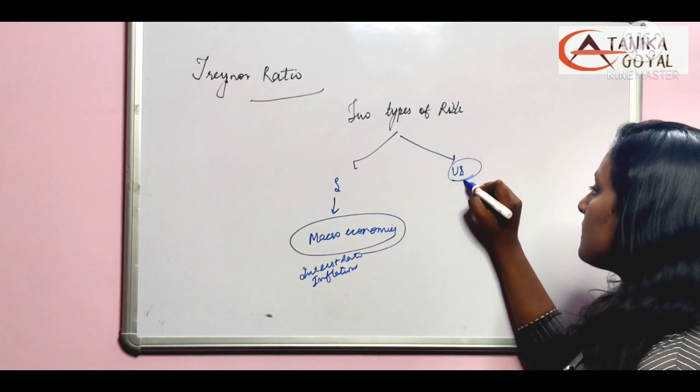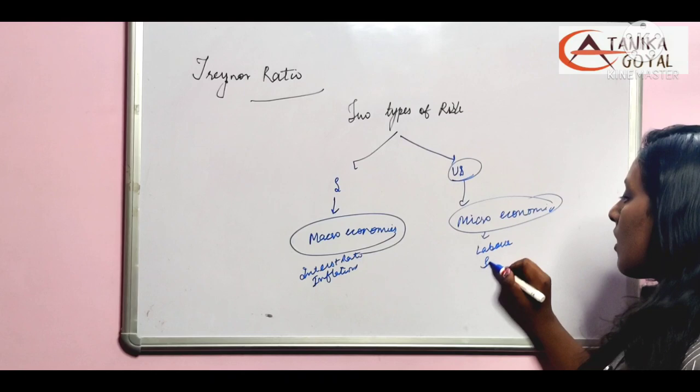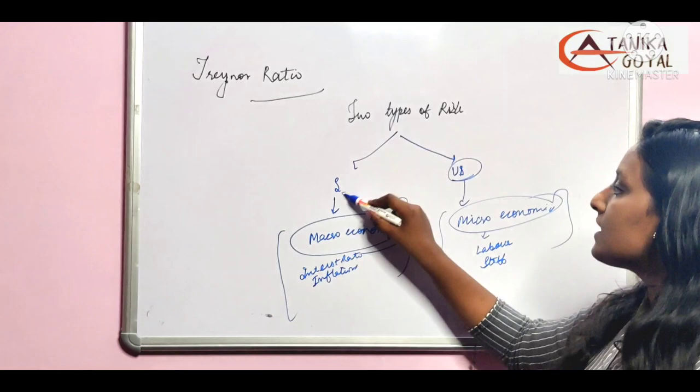Unsystematic risk is microeconomic factors which are in our hands, like the labor of our business, or the salary base, whatever staff, which is microeconomic which is in my business, those are all factors. So these are systematic risk and unsystematic risk.